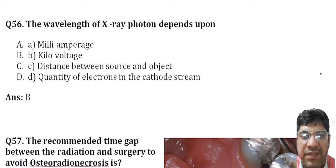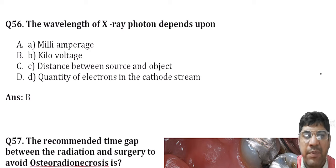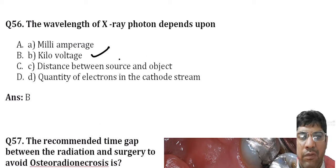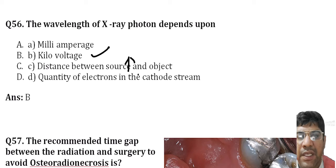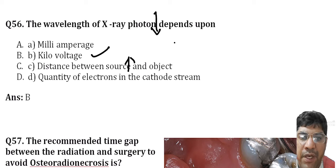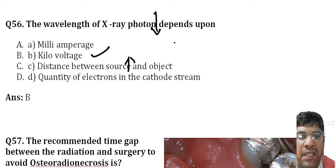The wavelength of an X-ray photon depends on the kilovoltage. When kVp is increased, it results in production of X-rays with a shorter wavelength. When kVp is decreased, it results in production of X-rays with a longer wavelength. That is the fundamental principle in radiology.